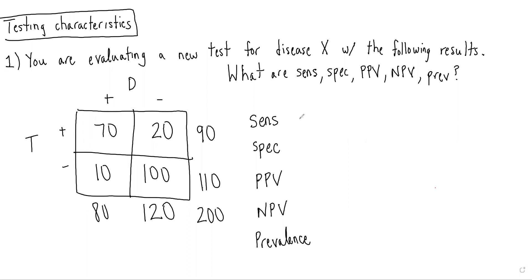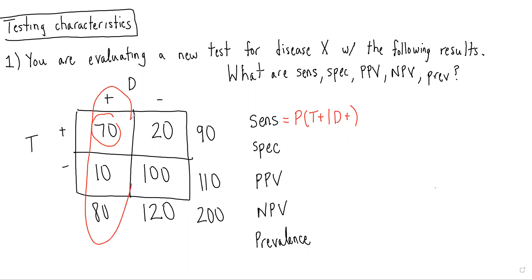So we remember sensitivity is equal to the probability of getting a positive test result given you have the disease. So in this case, it would be 70 over 80.